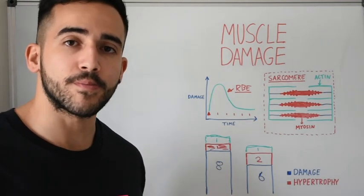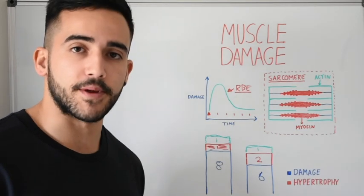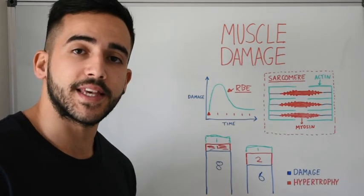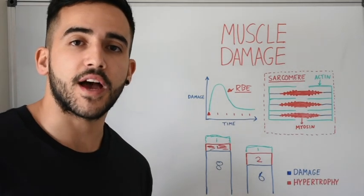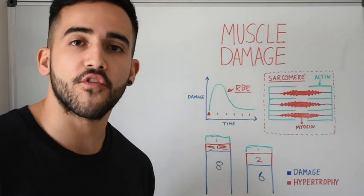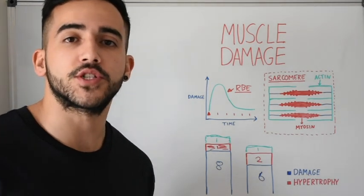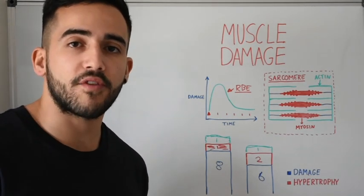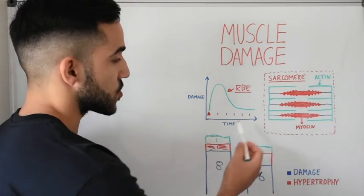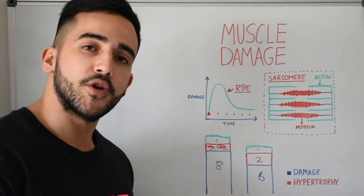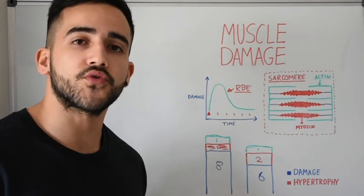Keeping exercises consistent is probably the best way to apply progressive overload without inducing high amounts of damage detrimental to your goals. Changing exercises on a weekly basis means you get high spikes in muscle damage each week, not only increasing damage but also preventing yourself from having enough time to progressively overload your training effectively — which is why I recommend keeping exercises consistent for at least six weeks.